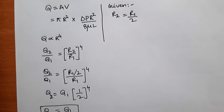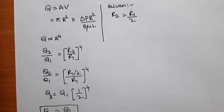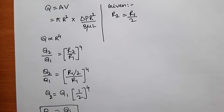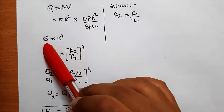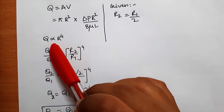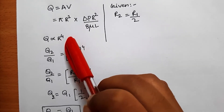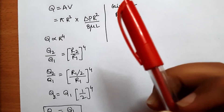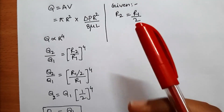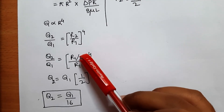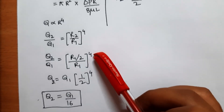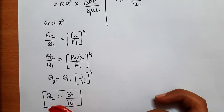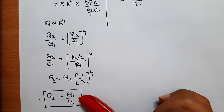Volumetric flow rate equals area times velocity. Since flow is laminar, we use the Hagen-Poiseuille equation, which shows that volumetric flow rate varies with radius to the power 4. For the new condition where R₂ = R₁/2, taking the ratio and substituting R₁/2 for R₂, the new volumetric flow rate is 1/16th of the original.